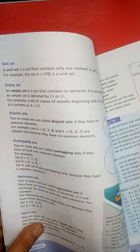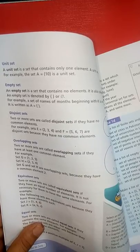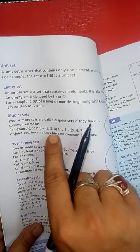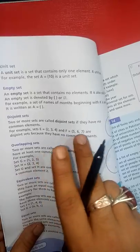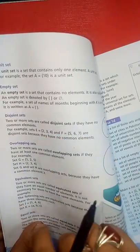Two or more sets are called disjoint sets if they have no common elements. For example, set E has {1, 2, 3, 4} and set F has {5, 6, 7}. There's no common number between them.